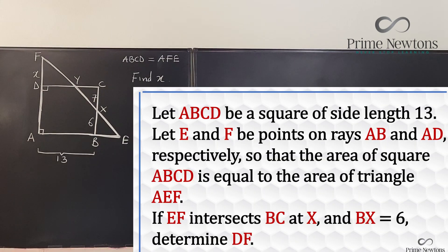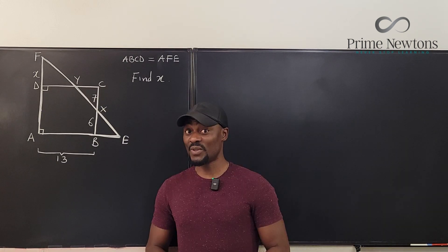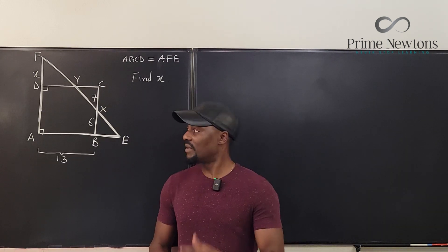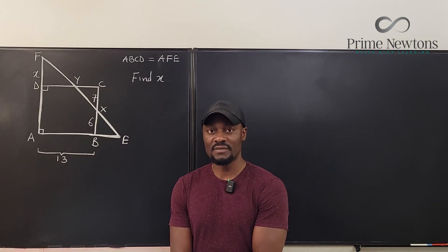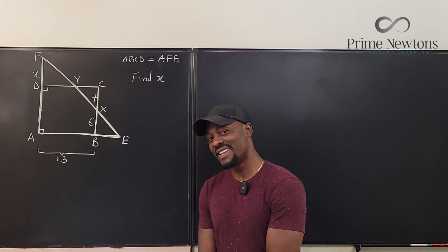Now the original question did not look like this, it was just a bunch of words. So let me show you what the words are. Let ABCD be a square of side length 13. Let E and F be points on rays AB and AD respectively so that the area of square ABCD equals the area of triangle AEF. If EF intersects BC at X and BX equals 6, determine DF. That's what the question was. But this was my interpretation of it. So let's get into the video.